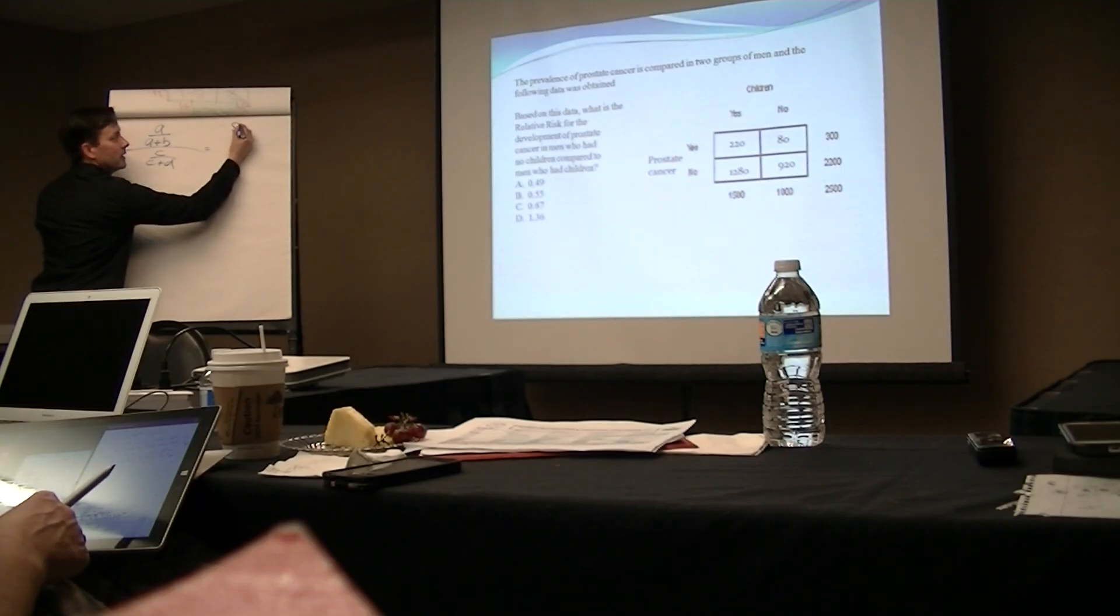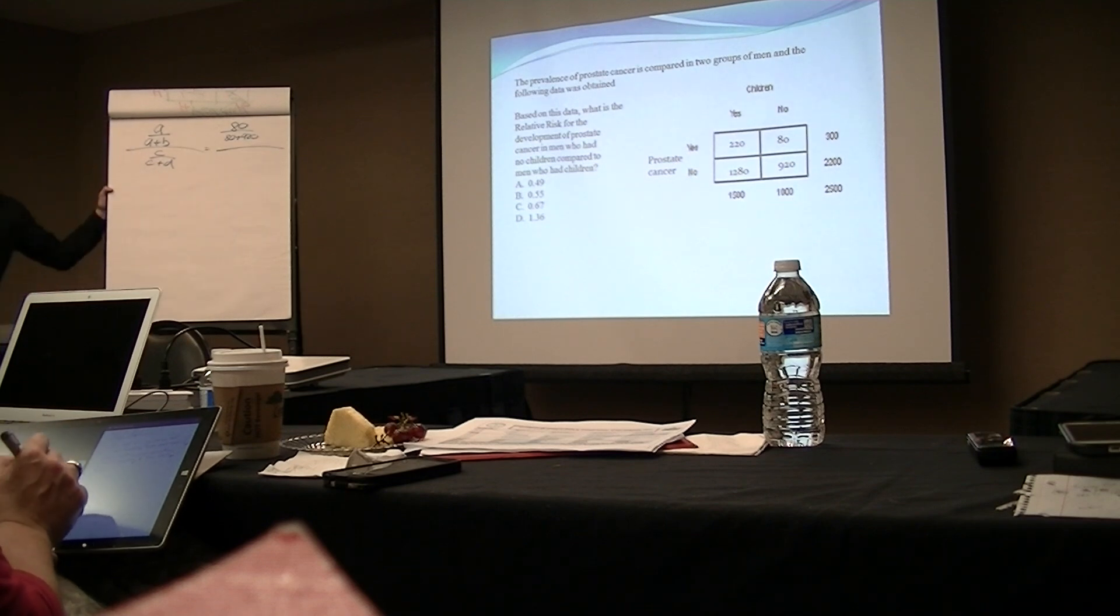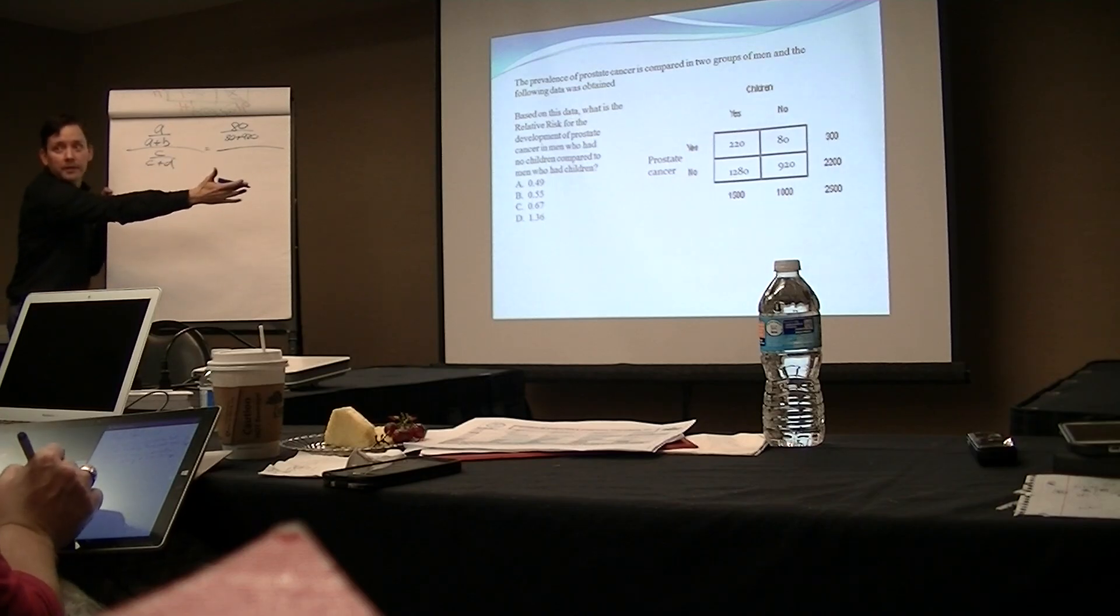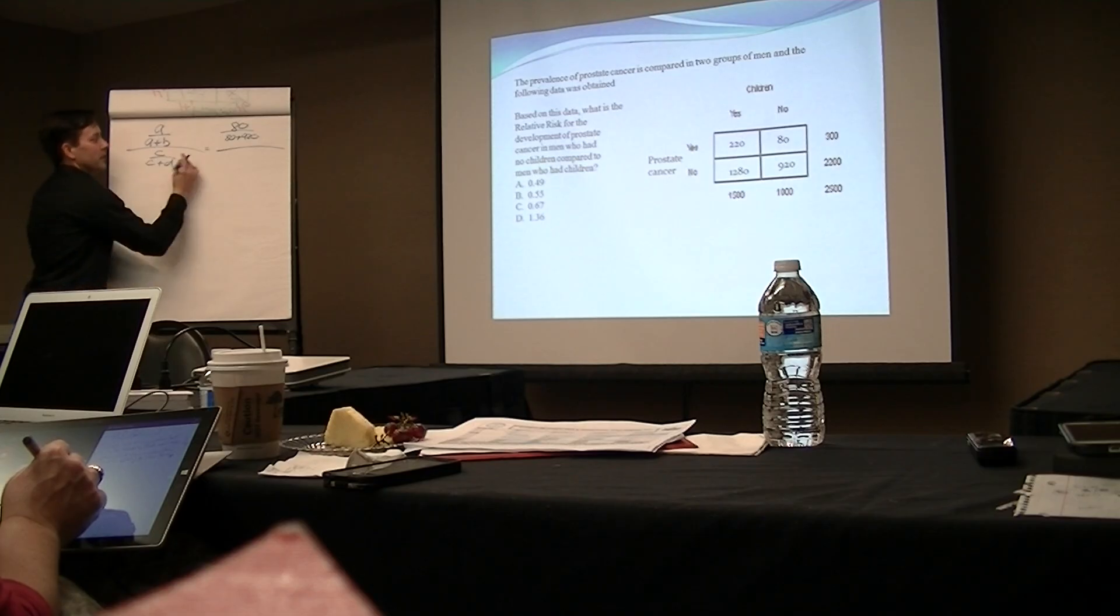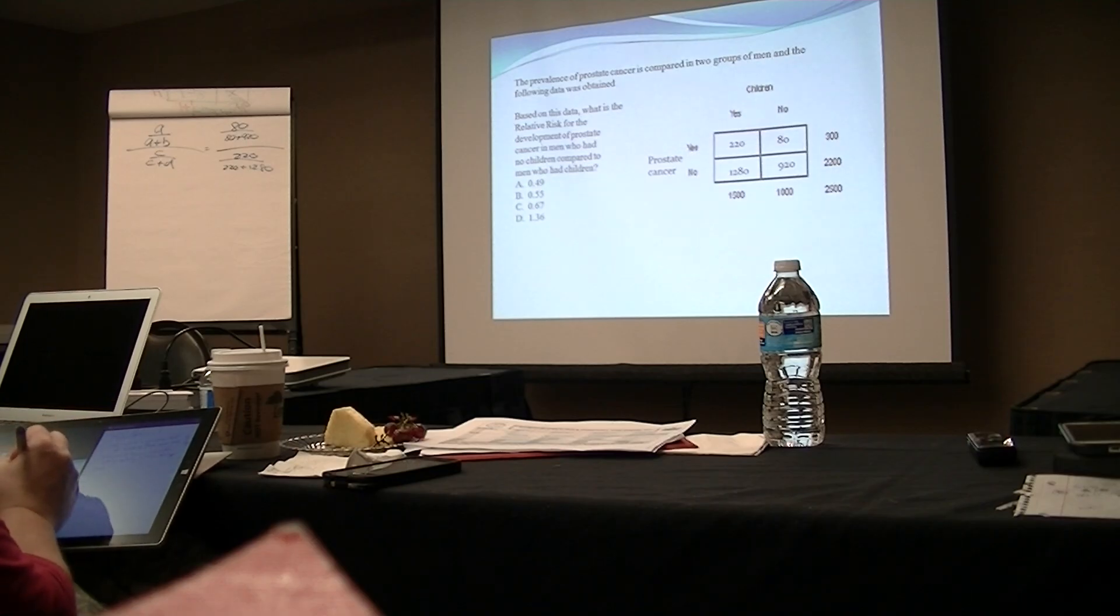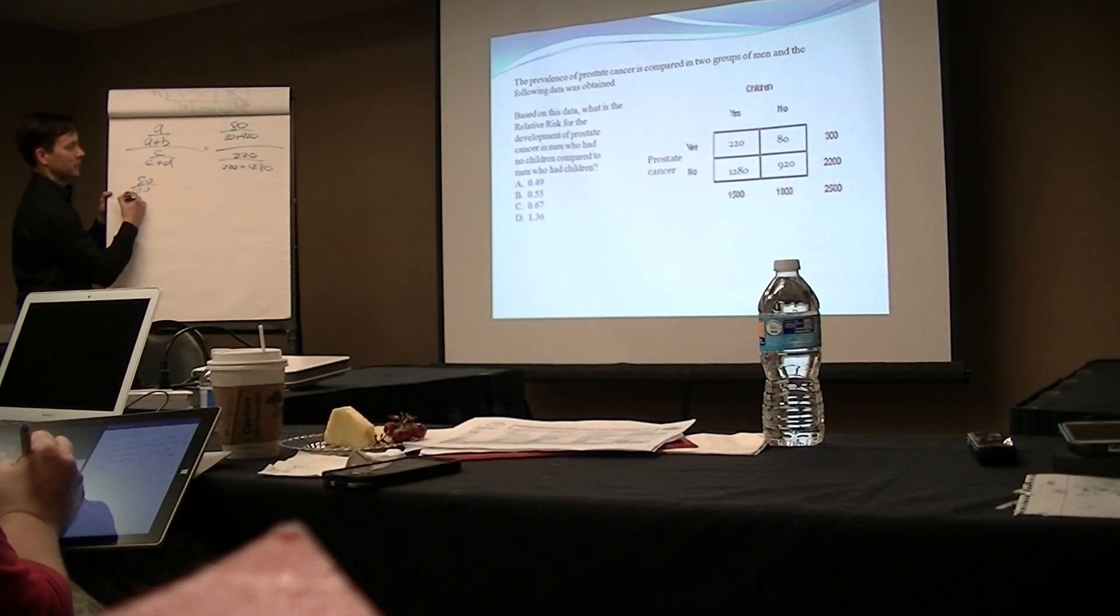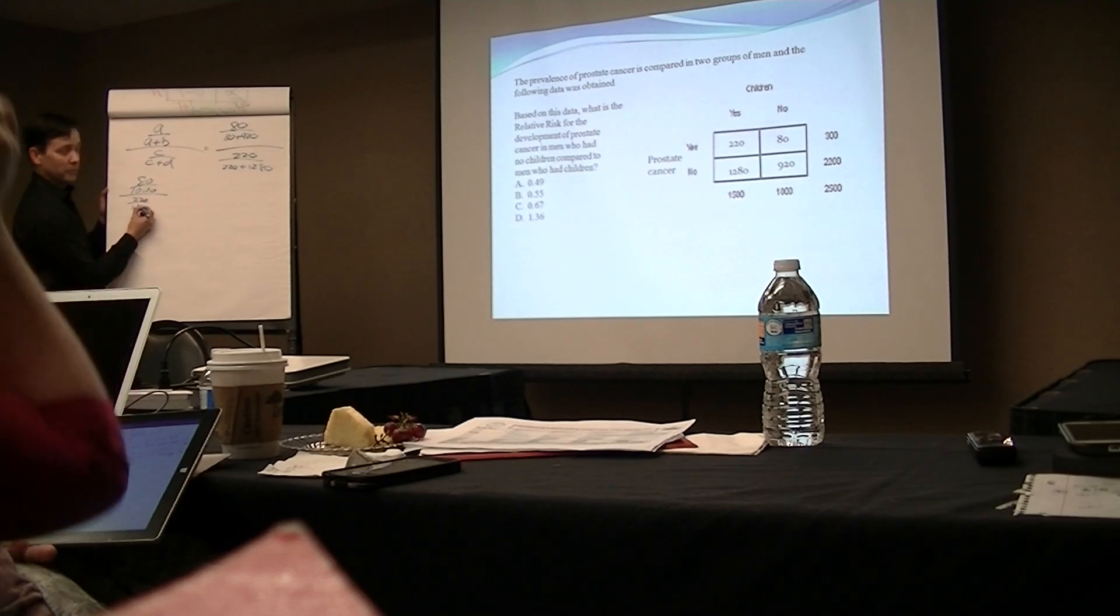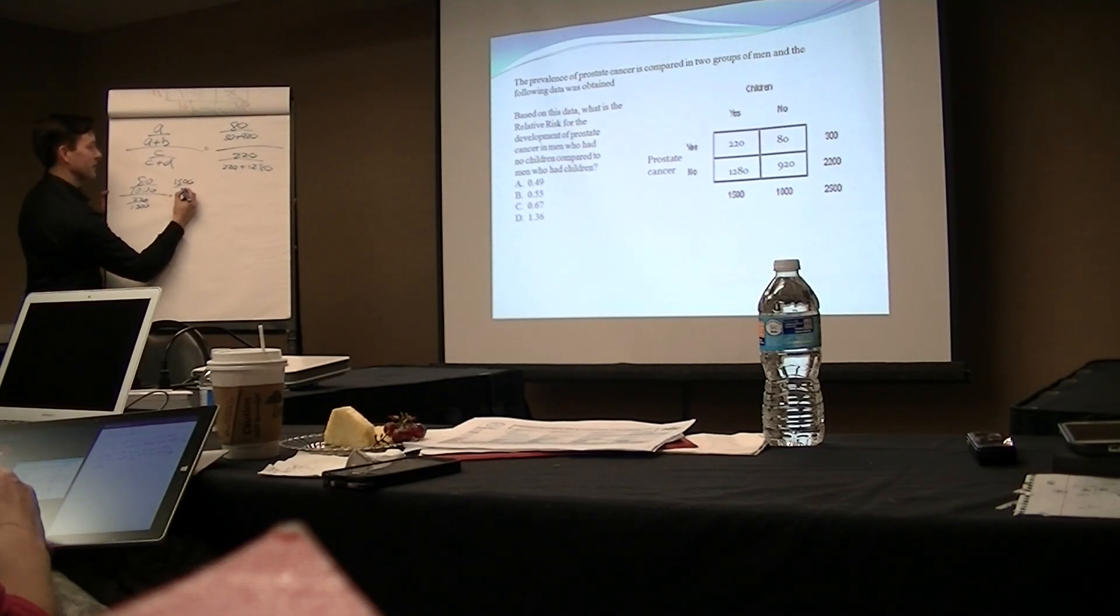Start me here, what goes right here? 80 over 80... over 1,000. They're nice enough to give us the addition part of it, and on the test it's going to be something that you can really simplify. Right here, what goes here? 220 over 220, so that's 1,280.